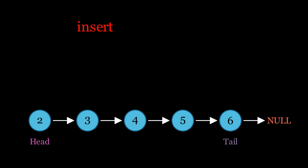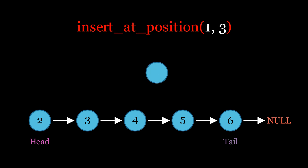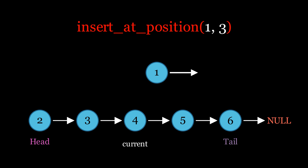Let's say you want to insert data at the third index. The algorithm creates a new node, then creates a current variable starting at the head and traverses until it reaches the node just before the target index. It then adjusts the pointers accordingly to insert the new node at the specified position. This operation takes linear time because the algorithm needs to traverse the list to reach the target index.